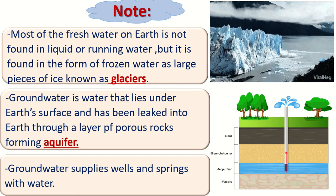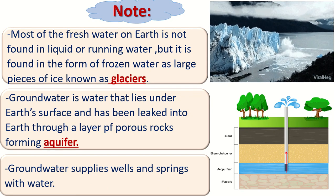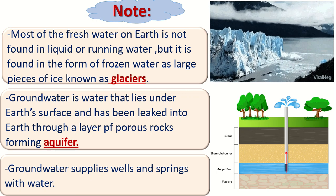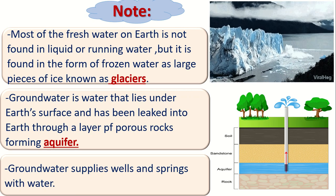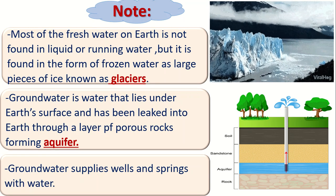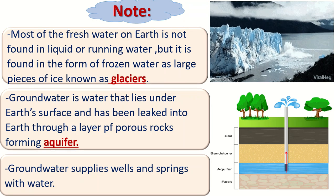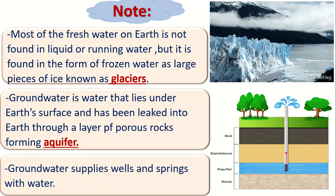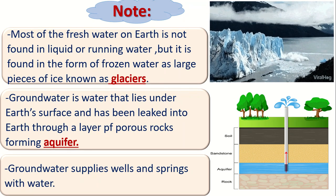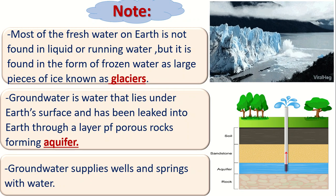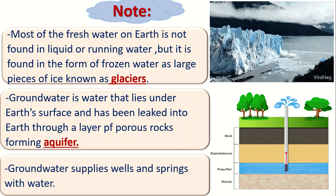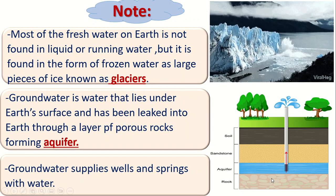The groundwater from the aquifer can supply wells and springs with water. So wells and springs get their water from the groundwater which lies in the aquifer.